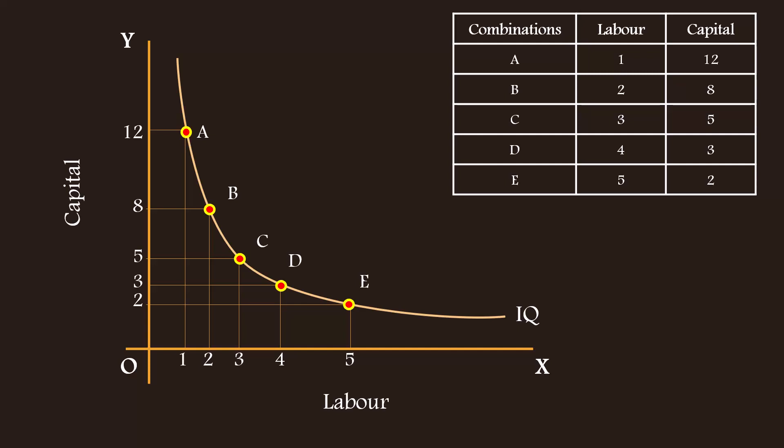Isoquant is a downward sloping curve. As the producer slides down from left to right, he substitutes labor for capital. He replaces a few units of capital with a few units of labor. When he gives up a few units of capital, output decreases. When he uses labor in the place of capital, output increases.